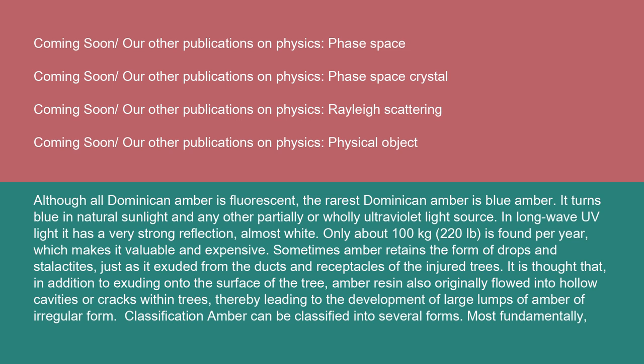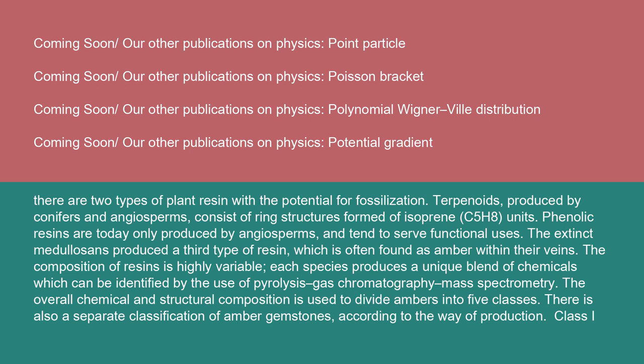Classification: Amber can be classified into several forms. Most fundamentally, there are two types of plant resin with the potential for fossilization. Terpenoids, produced by conifers and angiosperms, consist of ring structures formed of isoprene (C5H8) units. Phenolic resins are today only produced by angiosperms and tend to serve functional uses. The extinct Medullosans produced a third type of resin, which is often found as amber within their veins. The composition of resins is highly variable; each species produces a unique blend of chemicals, which can be identified by the use of pyrolysis, gas chromatography, and mass spectrometry. The overall chemical and structural composition is used to divide ambers into five classes.